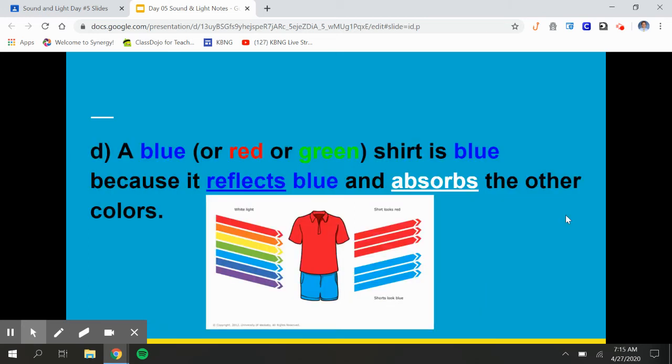So a blue dye or red or green, when we look at a shirt, a blue shirt is actually going to be reflecting blue. So it's going to absorb every other color and it's going to reflect blue. Or in this example down below, the red shirt is reflecting red light, but it's absorbing everything else. So when we see color, what we're actually seeing is the reflected colors.